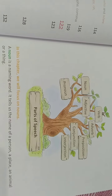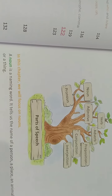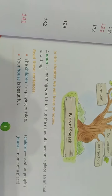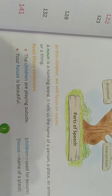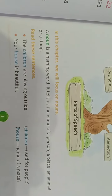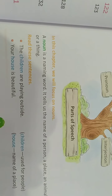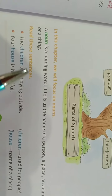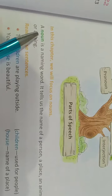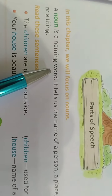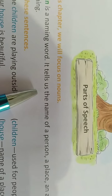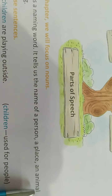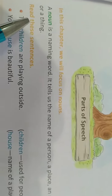So, we should have a better idea about the parts of speech. Here, as we are reading only noun in this lesson, so we will know more about noun. Here, it is given the definition of noun — you can see here: a noun is a naming word. It tells us the name of a person, a place, an animal or thing.